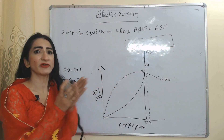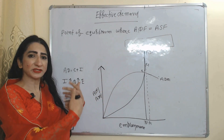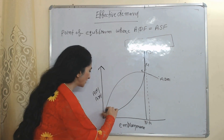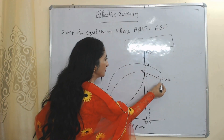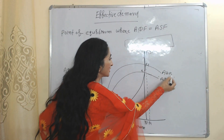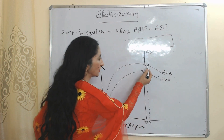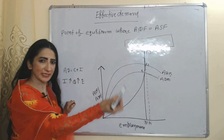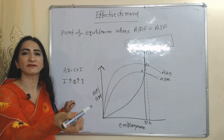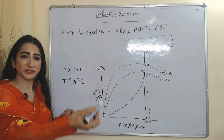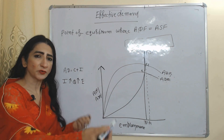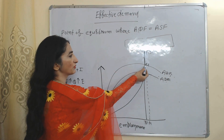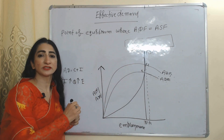That is why, initially, the government will invest in the economy. As the government invests, aggregate demand will increase, and as a result, the aggregate demand curve shifts forward from ADF to ADF1, and we eventually reach the full employment point E1. Because of the increase in aggregate demand, investment also increases, output increases, and employment increases until we reach full employment point E1.